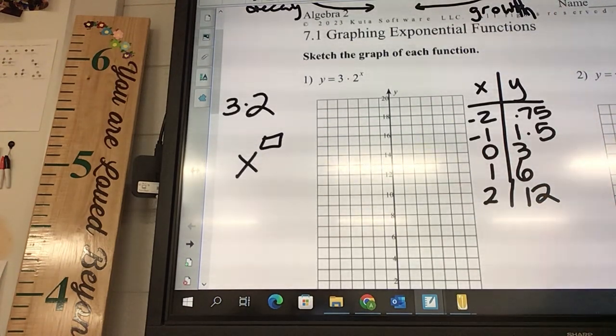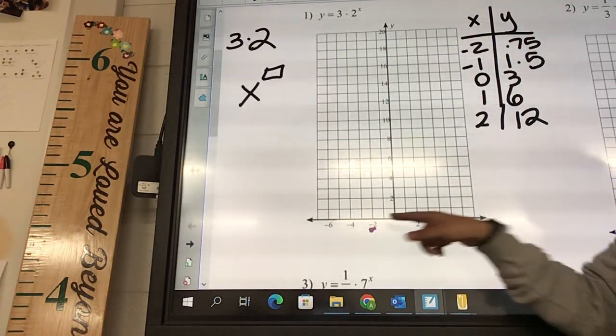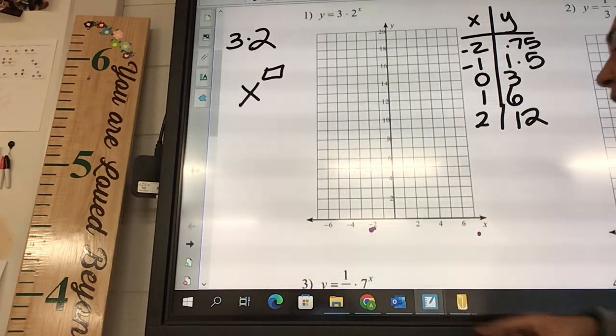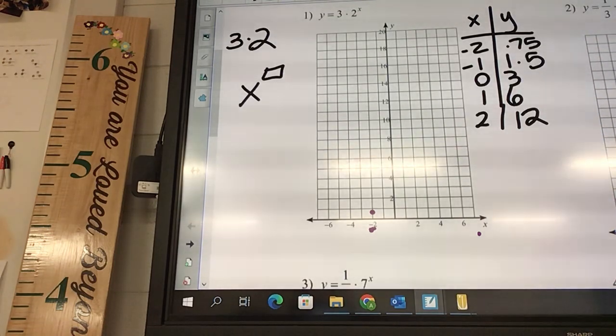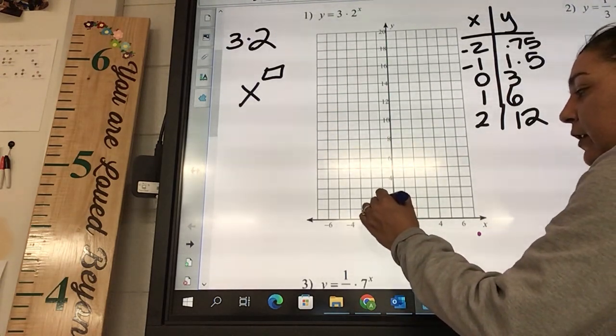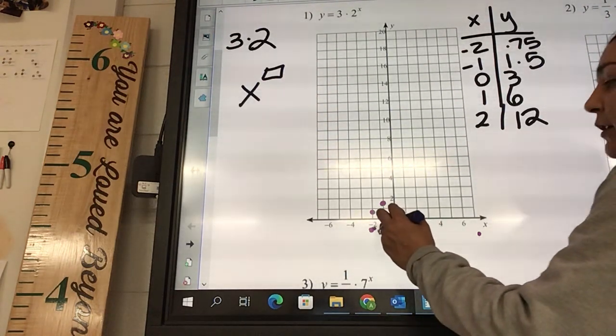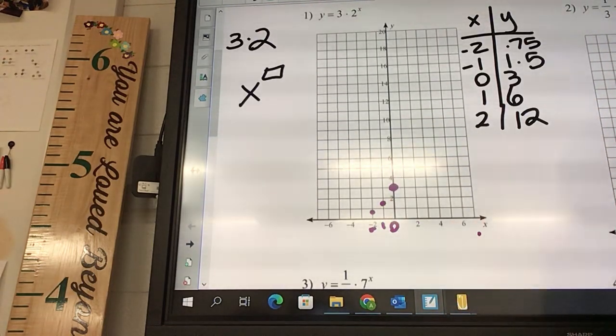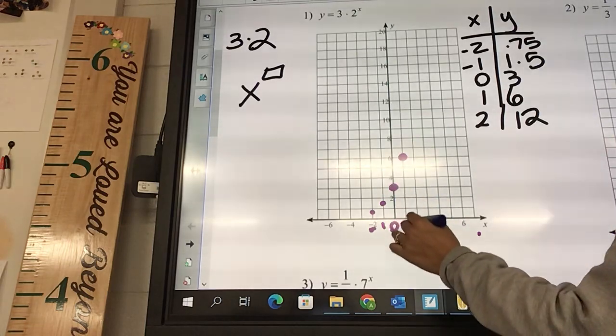So we start plotting them. We're going to go to the negative 2 spot. See how this is on the X line? You're going to go to negative 2 and 0.75. So if this is 1, 0.75 is going to be somewhere a little bit below it. And then we're going to go to negative 1, so 1 over, and 1.5. So it's going to be up just a little bit.